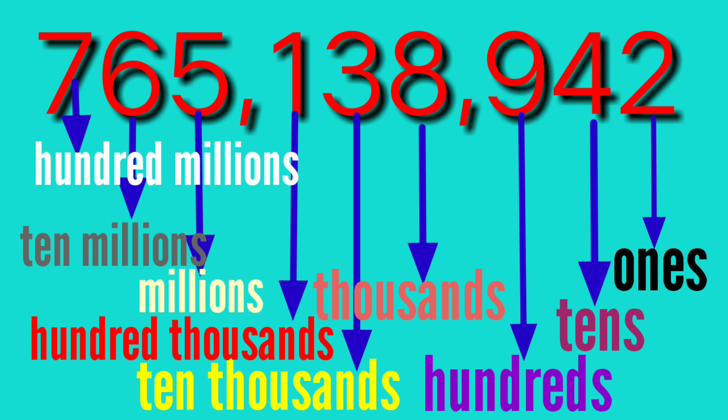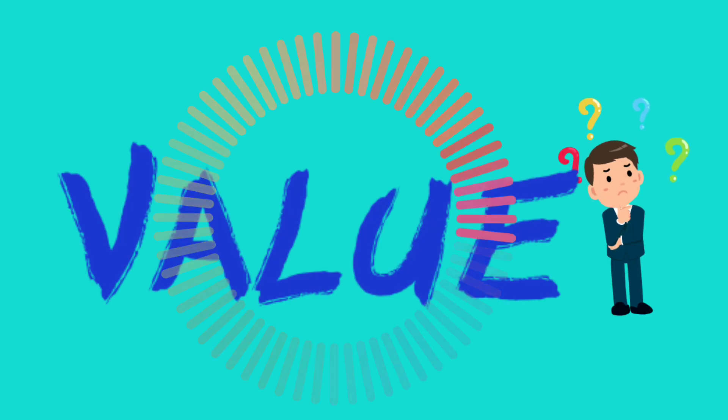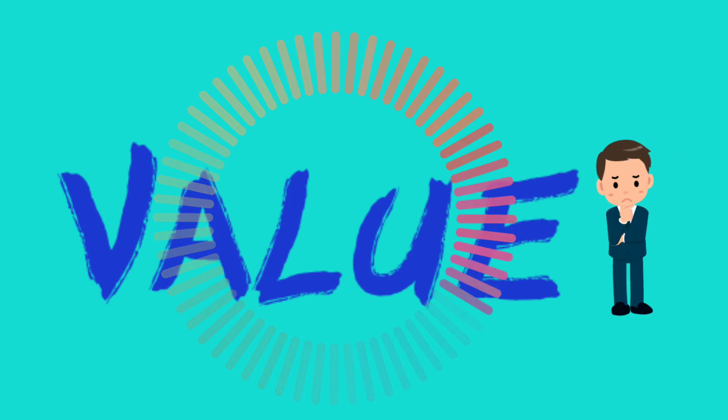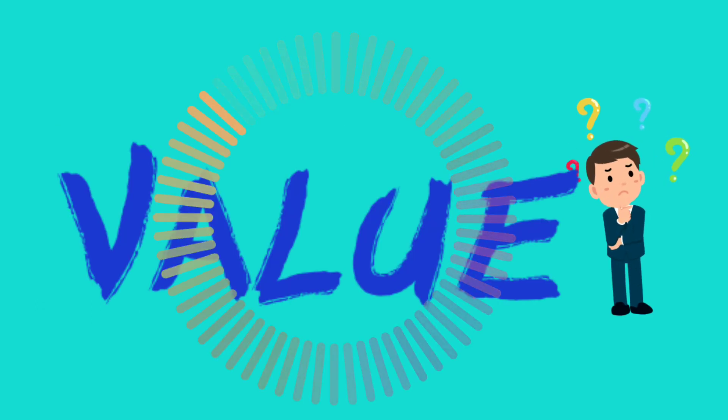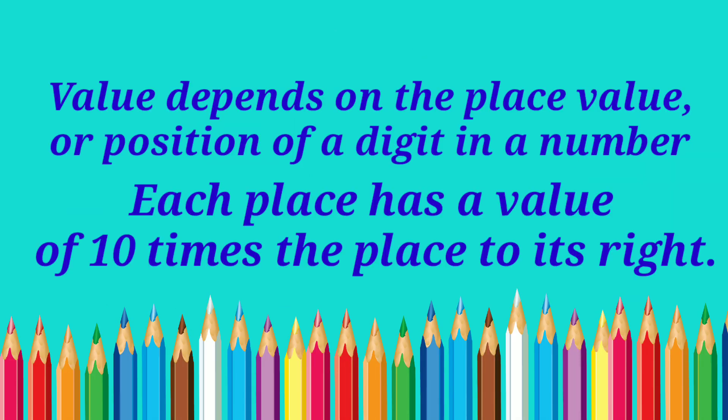These are the place value names in a nine-digit number. Now let us proceed to value. What is value? Value depends on the place value or position of a digit in a number. Each place has a value of ten times the place to its right.